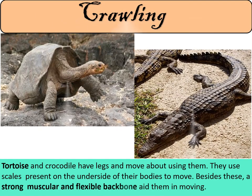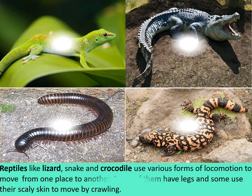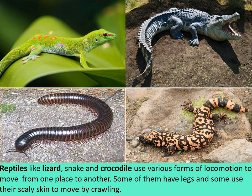Children, the next movement is crawling. Tortoise and crocodile have legs and move about using them. They use scales present on the underside of their bodies to move. A strong, muscular, and flexible backbone aids them in moving. Reptiles like lizard, snake, and crocodile use various forms of locomotion — some have legs and some use their scaly skin to move by crawling.